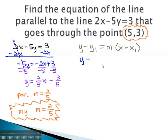Plugging in what we know, y minus y1, the point we're given, is 3, equals m, a slope of 2 fifths, times x minus x1, which we were given, is 5.